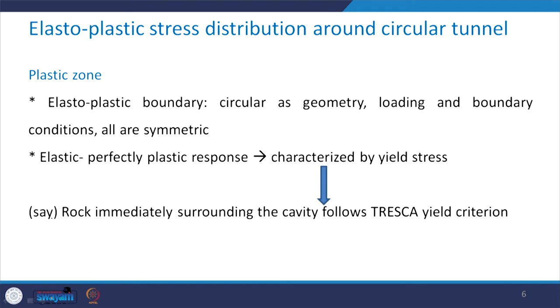The elasto-plastic boundary is circular. Why? Because the geometry, loading, and boundary conditions of the problem are all symmetric. So for all those conditions — equilibrium and everything — to be satisfied, this elasto-plastic boundary has to be circular.